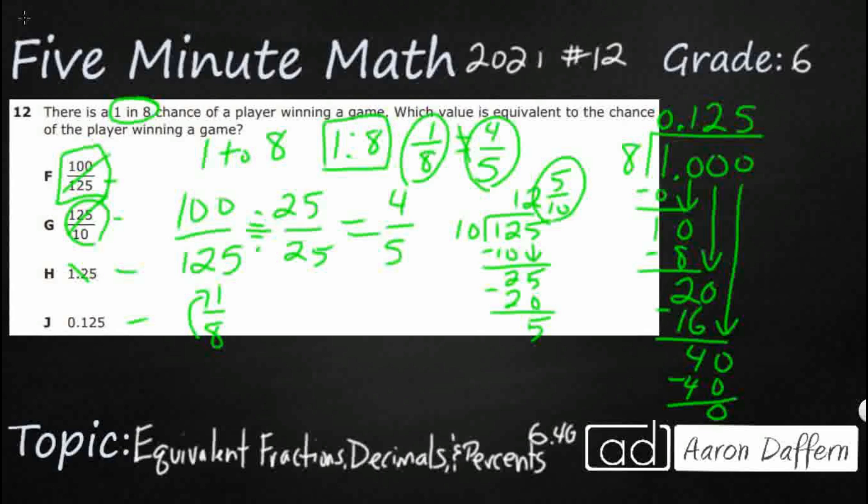So 1 eighth is equal to 125 thousandths, or 0.125. And that is probably going to be a benchmark fraction that you should memorize. And if we want to turn this into a percent, we would simply move the decimal over twice. That would be 12.5%. Answer is J.